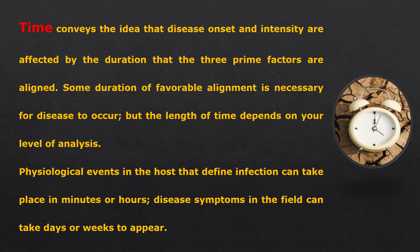Time conveys the idea that disease onset and intensity are affected by the duration that the three prime factors are aligned. Sometimes it takes hours to develop symptoms; sometimes it comes very fast. Some duration of favorable alignment is necessary for disease to occur. Physiological events in the host that define infection can take place in minutes or hours, while disease symptoms in the field can take days or weeks to appear. That is why time and human beings are also considered very important components of the Disease Pyramid.